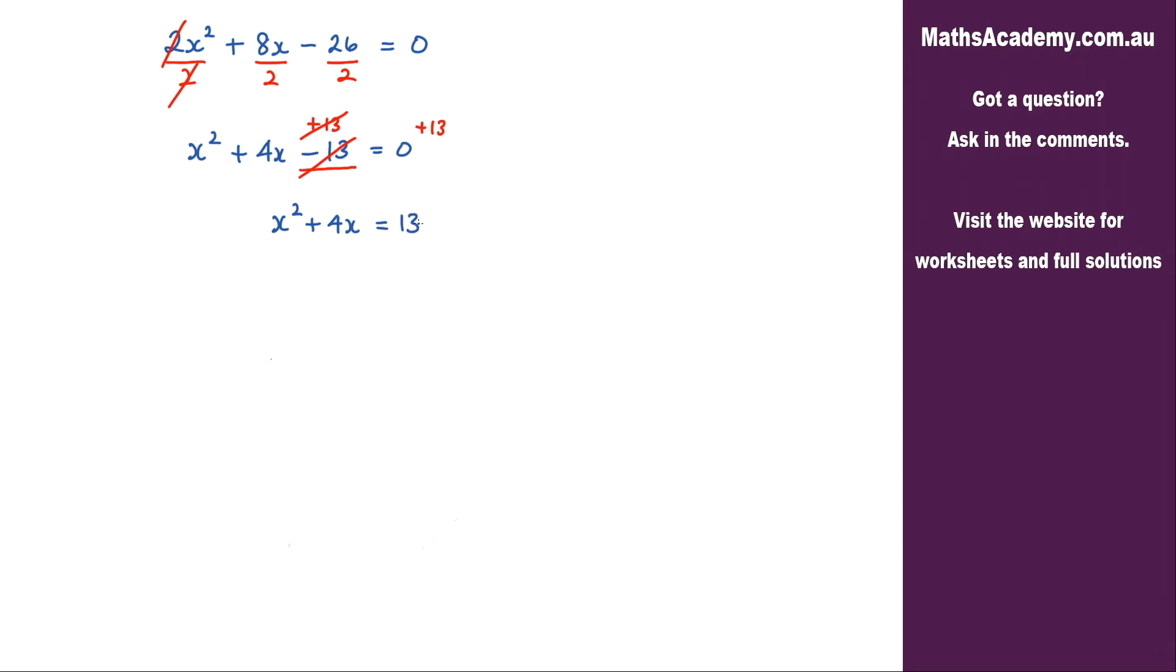The next step is to check if the coefficient in front of the x² term is equal to 1, which it is. Although there's not a 1 written here because we don't write the 1, it is 1x². Now the next thing we're going to do is to complete the square step.